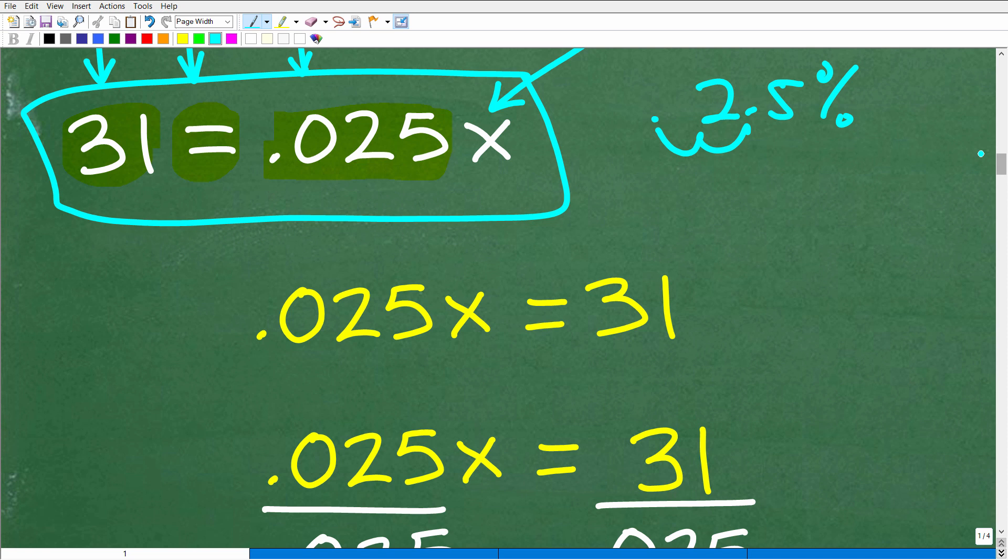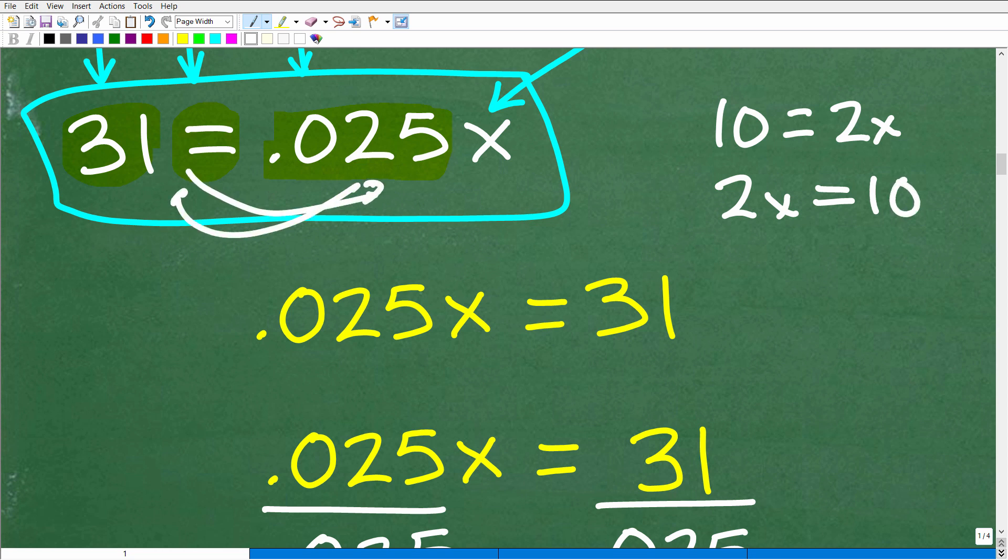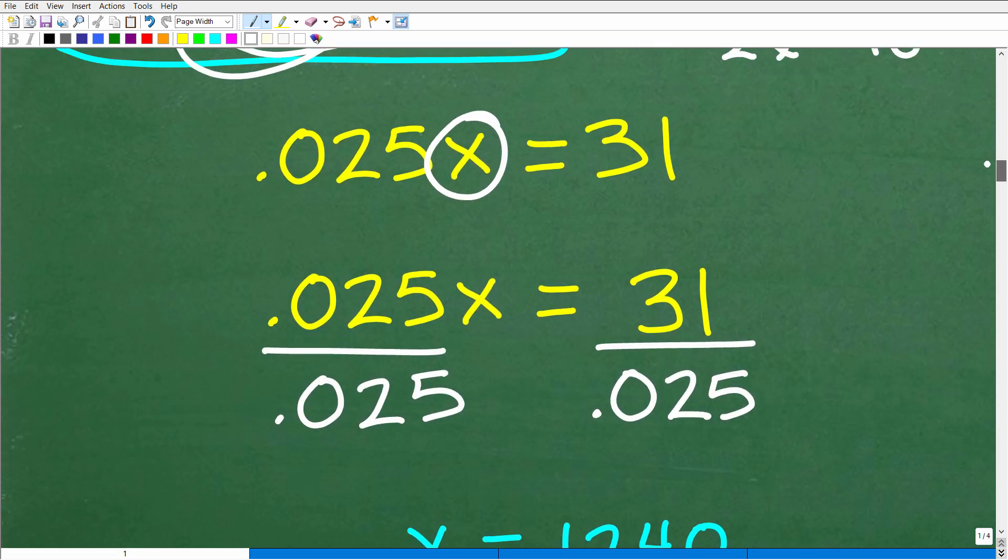So right here, we have 31 is equal to 0.025. Many of you are used to having the variable on the left-hand side. In other words, it's more common to write an equation, not like this, 2 equals 2x. Typically, we like to see the equation 2x is equal to 10. So feel free to switch the sides. The left is equal to the right. The right is equal to the left, so I'm going to write this equation as 0.025x is equal to 31. And now the objective is to solve for x. So how do we do this? Pretty straightforward. All we need to do is divide both sides of the equation by 0.025.